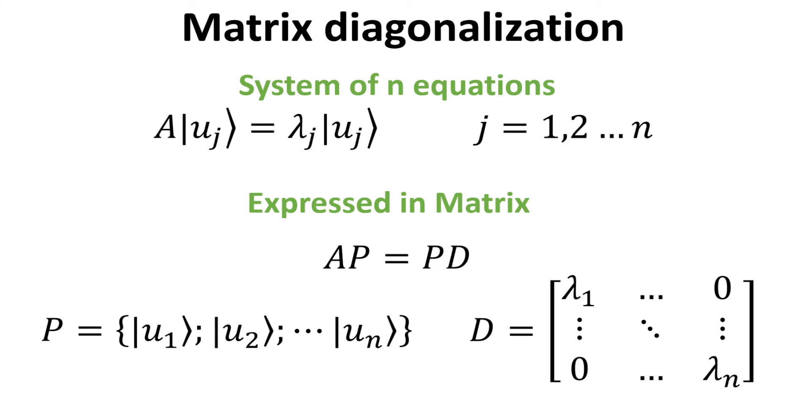Reminding ourselves that A is an n by n square matrix and U ket is an n by 1 vector, then we can combine these linear systems of n equations into a matrix form: AP equals PD.